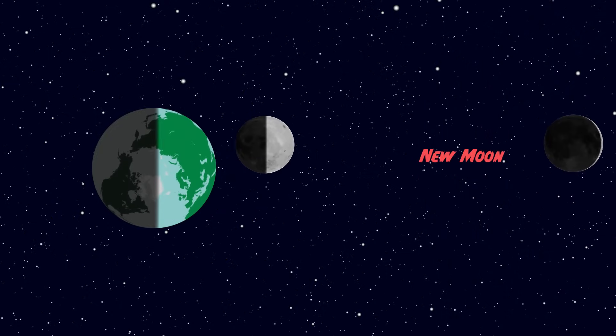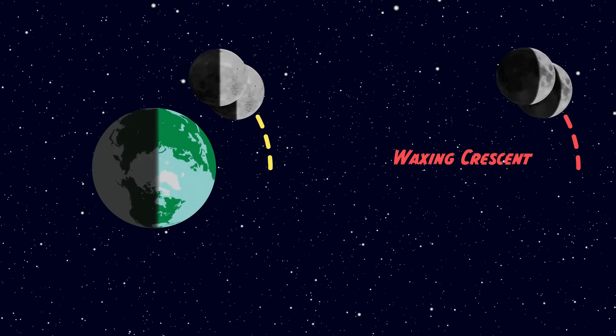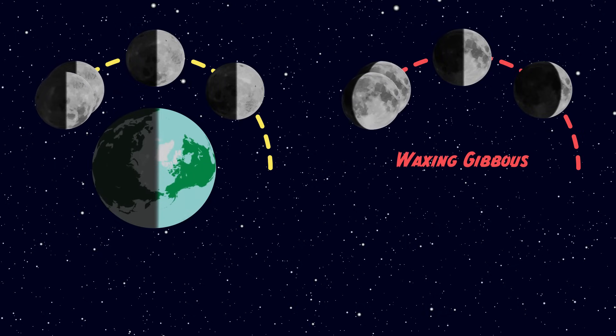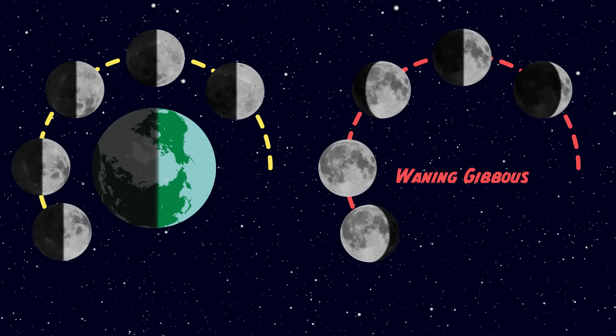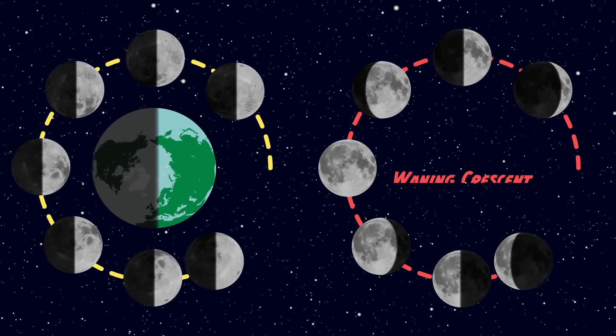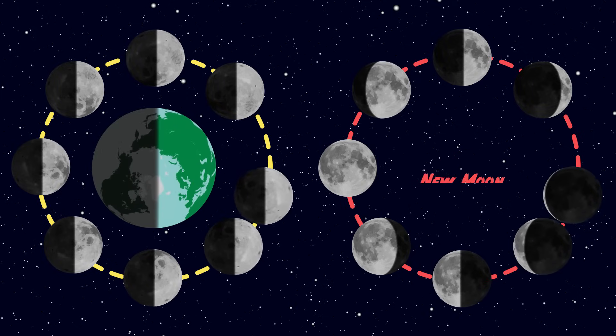So to recap, the moon has phases because one side of the moon is always lit and one side is always dark. As the moon rotates around the Earth, we constantly see different sections of the moon lit up and in darkness, which results in the phases that we know and love.